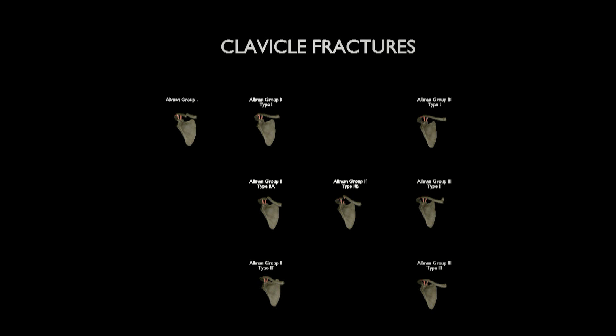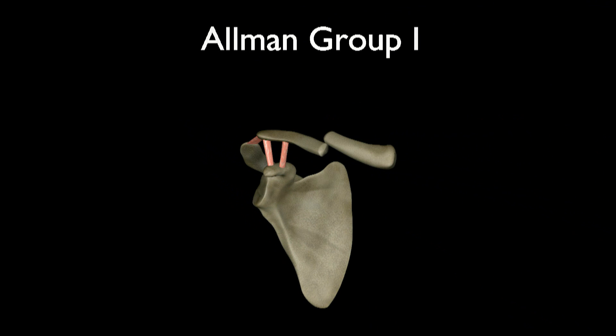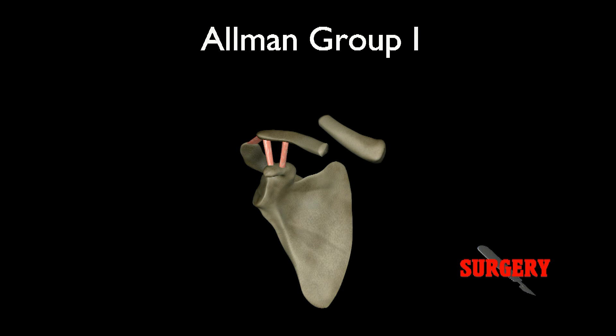Group 1 fractures are fractures that occur mid-shaft. These fractures usually heal well without surgery and are treated in a figure-of-8 brace or sling. However, if the fracture is severely displaced or shortened, or if one of the fragments threatens to poke through the skin, surgery may be necessary.